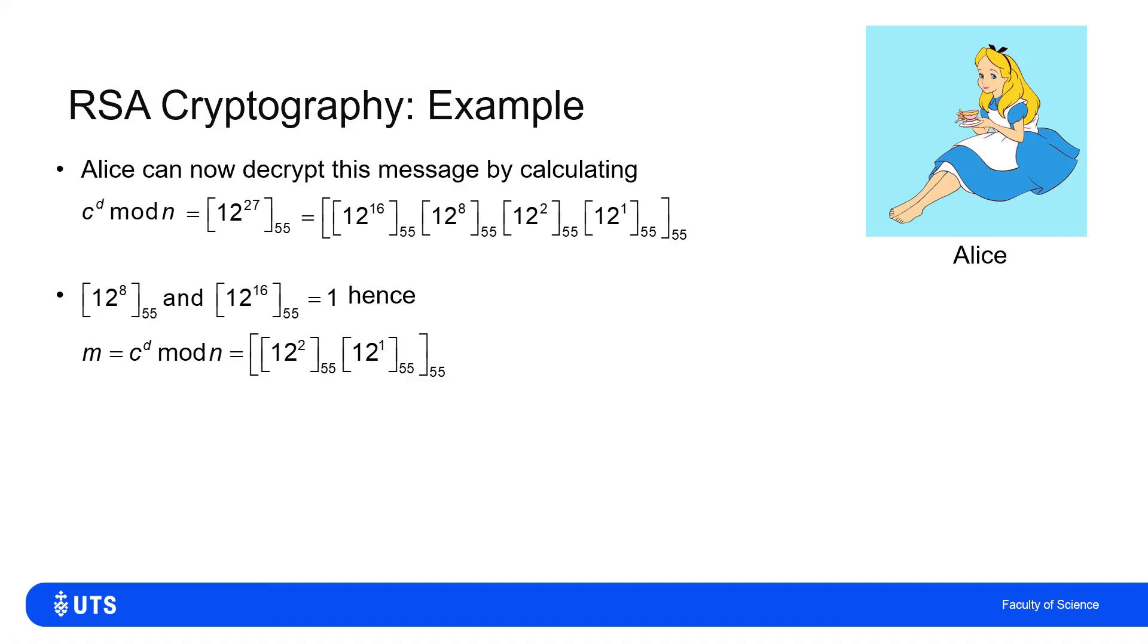And what I'm left with is that 12 to the 27 mod 55 is going to be the same as 12 squared mod 55 times 12 mod 55 mod 55. 12 squared is 144, 144 mod 55 is, well, 2 lots of 55 is 110, plus a remainder of 34. 34 times 12 is 408, 408 mod 55 gives a remainder of 23.